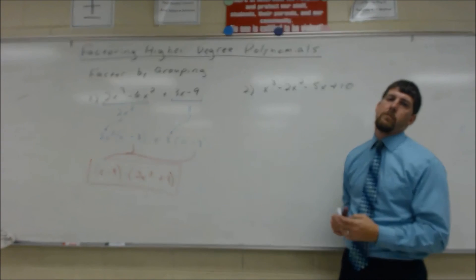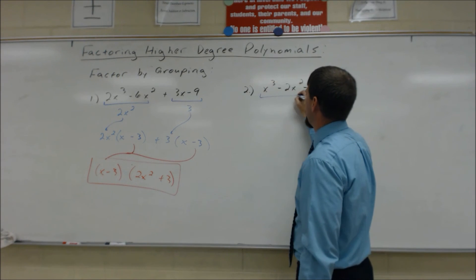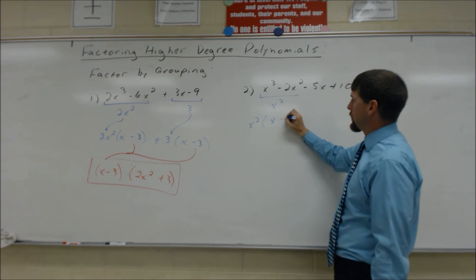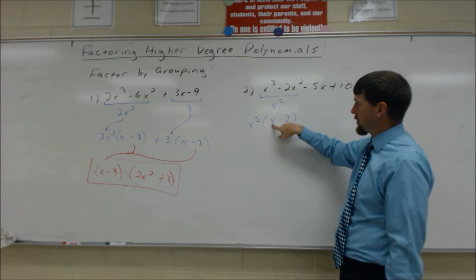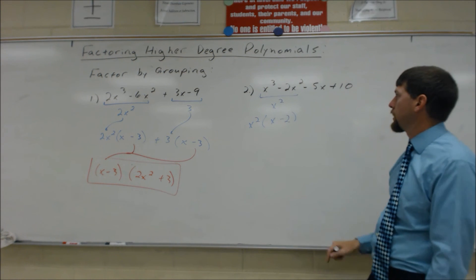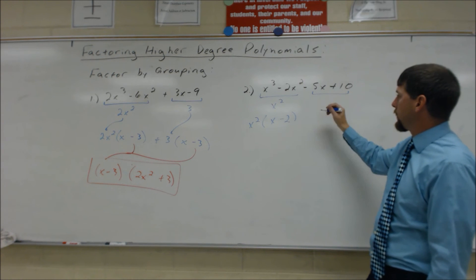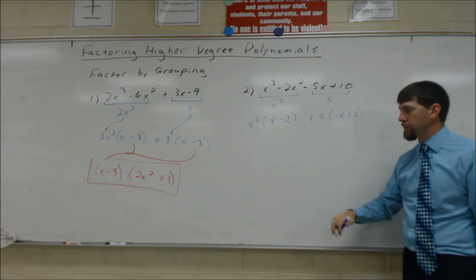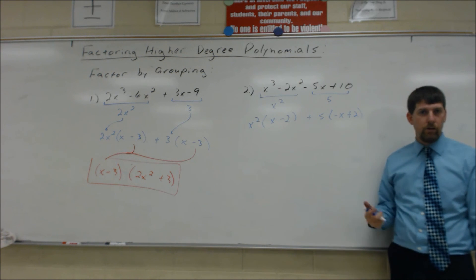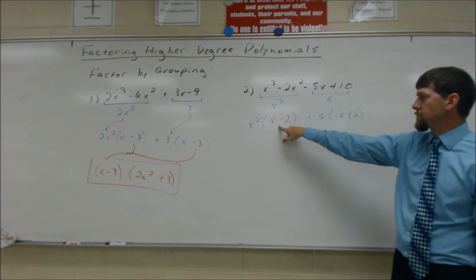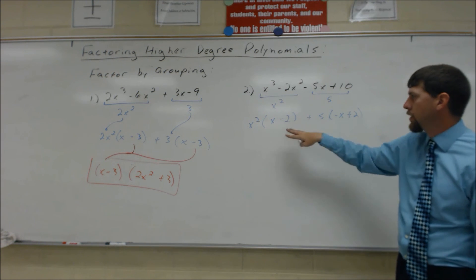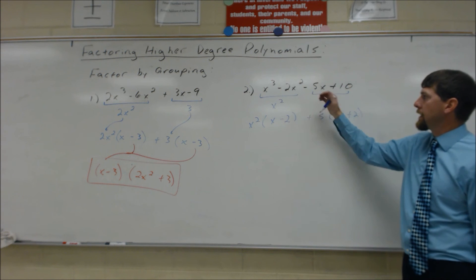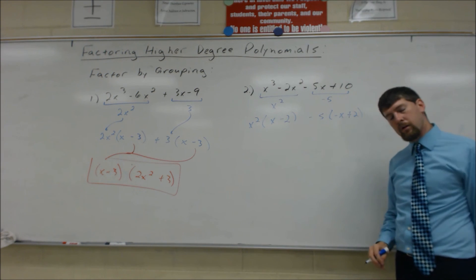On to example 2 with four terms. The first two terms have a common factor of x squared, leaving x minus 2. For the last two terms, pulling out positive 5 would leave negative x plus 2, which is not identical to x minus 2. So we need to pull out negative 5 instead — giving us x minus 2. We pull out whatever is necessary, positive or negative, to make the binomials identical.